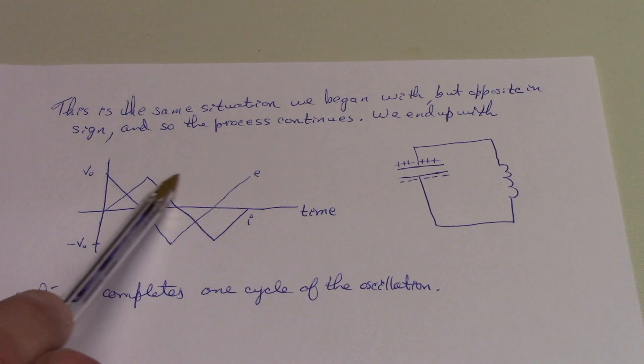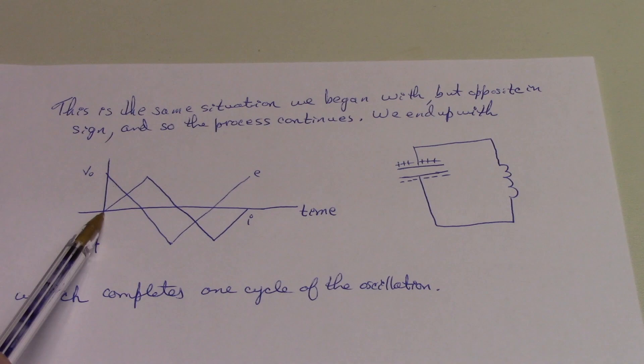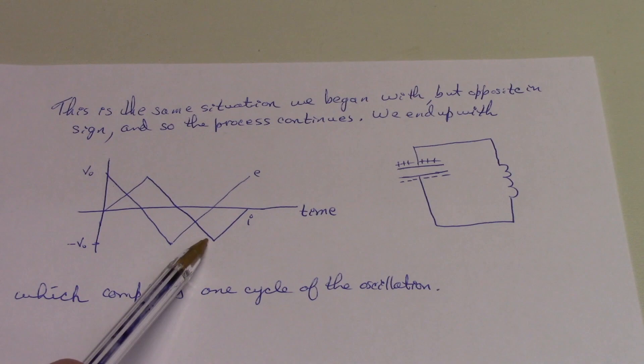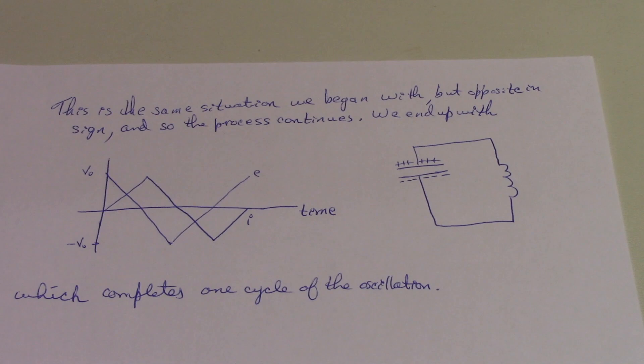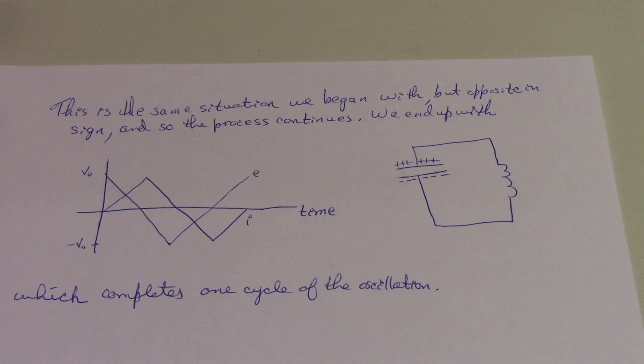And we see that the current starting off at a small amount increasing, then decreasing due to Lenz's law, continuing on, and then increasing again as the field about the inductor changes. So at the end of one cycle, we have the capacitor charged up in exactly the same way, and we say that this has completed one full cycle of an oscillation.